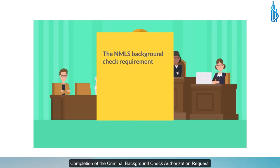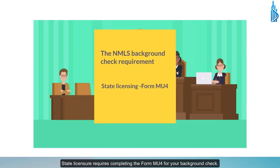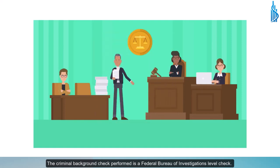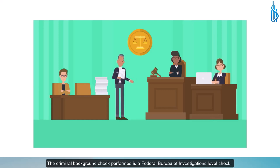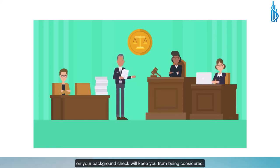Completion of the Criminal Background Check Authorization Request is required for submission of your application form. State licensure requires completing the form MU-4 for your background check. The Criminal Background Check performed is a Federal Bureau of Investigations level check. It is important to note that Skyline School is not able to determine whether or not a past incident on your background check will keep you from being considered.